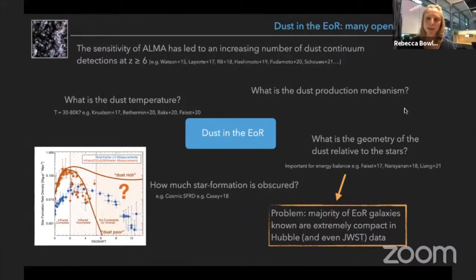So we want to understand what is the dust production mechanism, this is really fundamental, and part of this is understanding what is the dust temperature which is currently still quite unknown at these redshifts, and this is all crucial for understanding how much of the star formation at these redshifts is obscured.